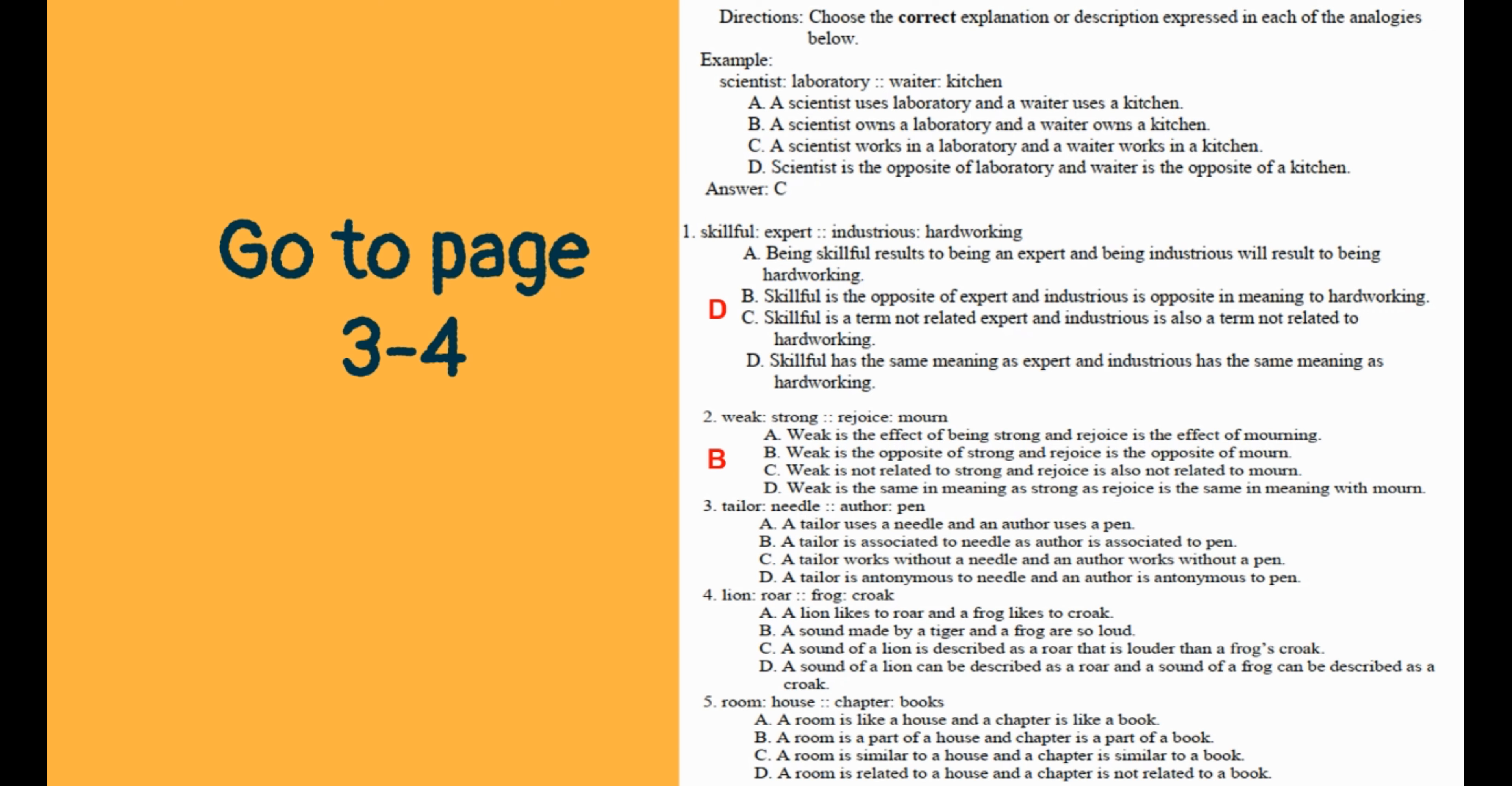Number three: tailor is to needle as author is to pen. The correct answer is letter A. A tailor uses a needle and the author uses a pen. Number four: lion is to roar as frog is to croak. The correct answer is letter A. A lion likes to roar and a frog likes to croak.